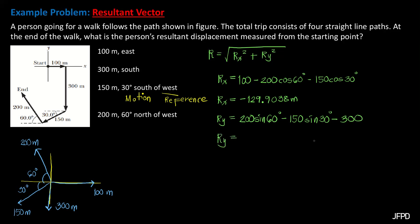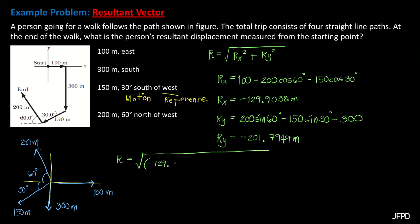Solving for Ry by inputting the equation on the calculator gives a value of Ry = −201.7949 meters. Then, solving for the magnitude of the resultant using R = √(Rx² + Ry²), substitute Rx = −129.9038 meters and Ry = −201.7949 meters.